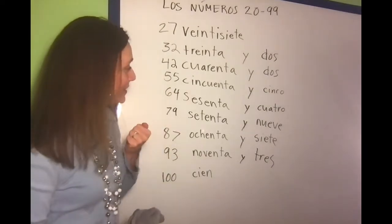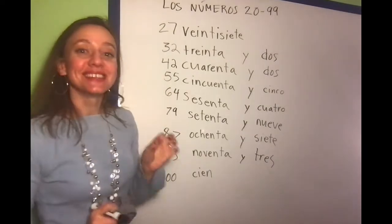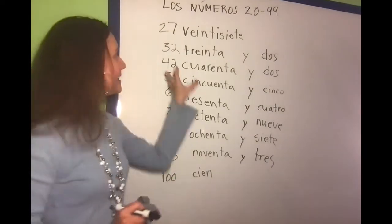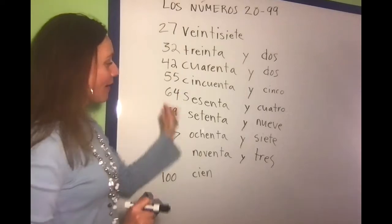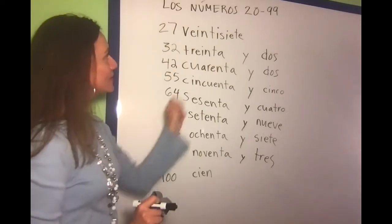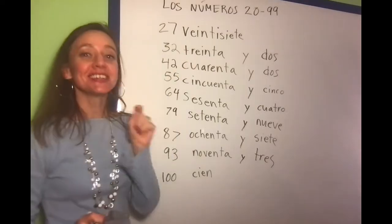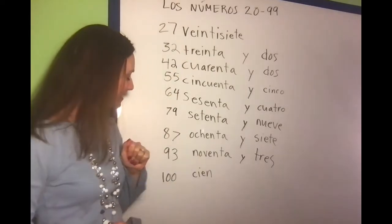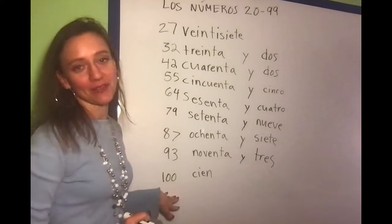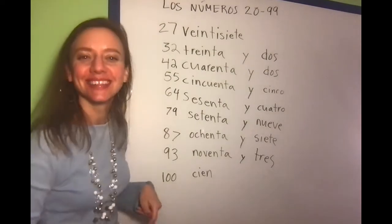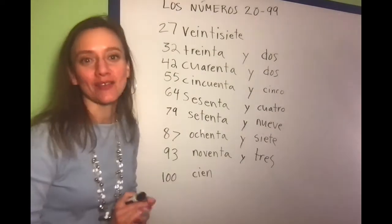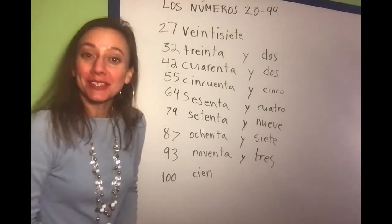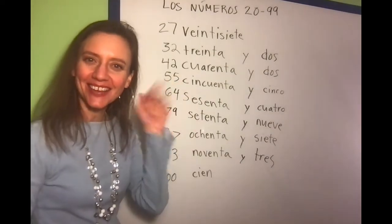So there you have it. This is how you count and figure out all the numbers from 20 all the way to 99 — and you can have a hundred in there too. Let me know if you have any questions. Happy counting. Adiós!